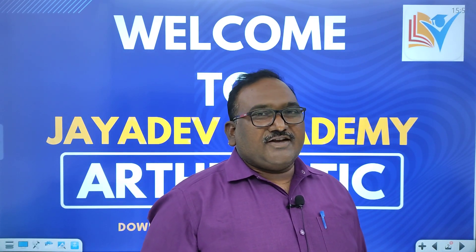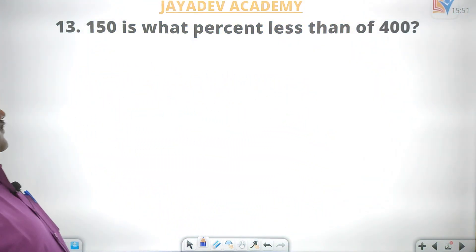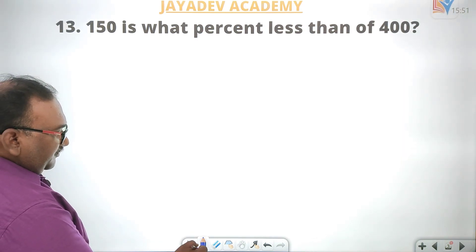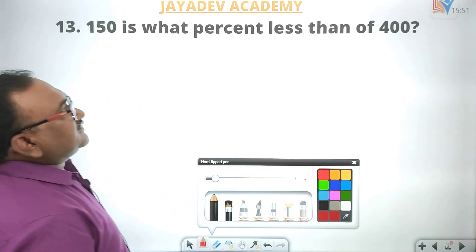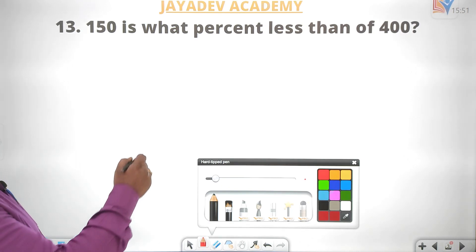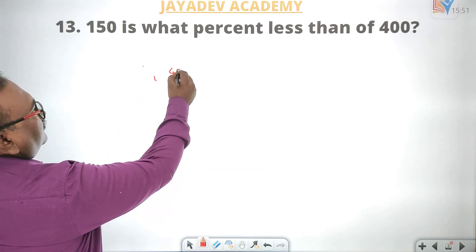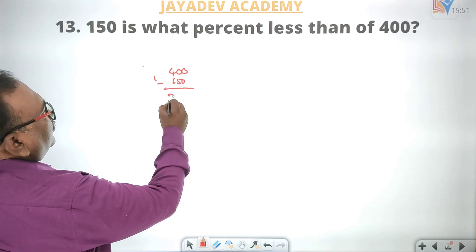Next, 13th problem. 150 is what percent less than 400? The base is 400 and the difference is 400 minus 150, which equals 250.